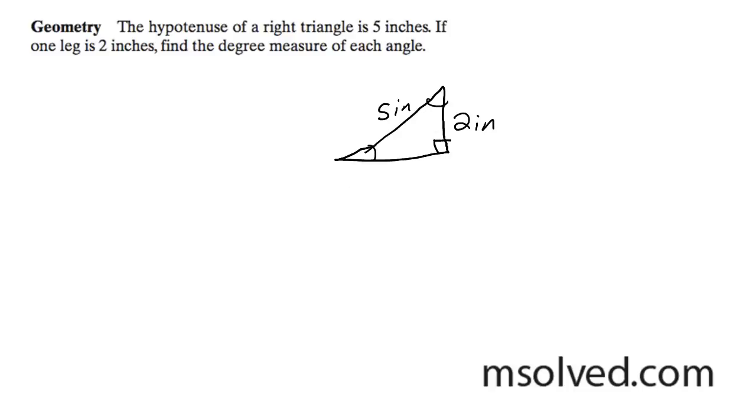So what we're going to do here is since I know these two sides, I can start off by finding this angle here. I'll just call it theta equals two over five. So I can do this by doing inverse sine of two over five.